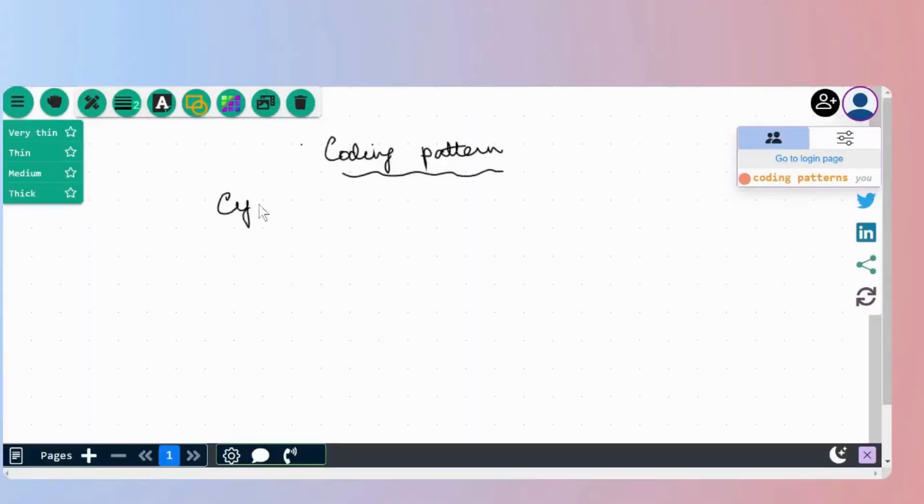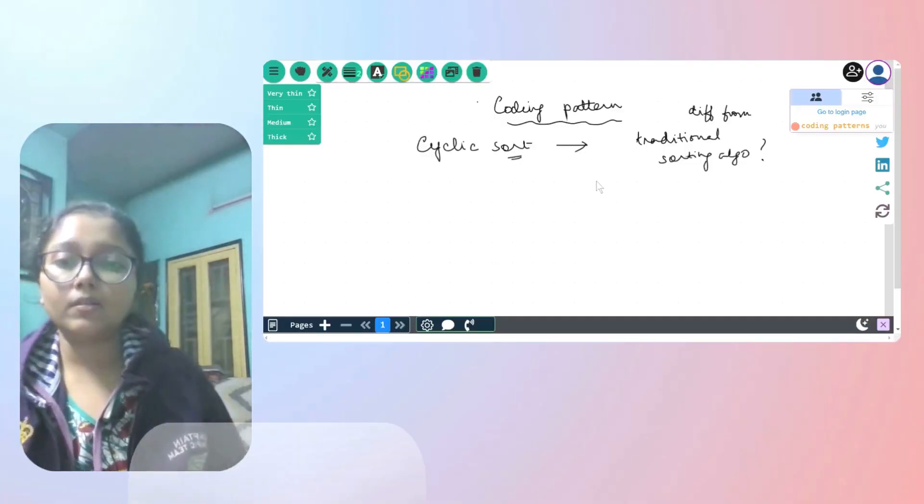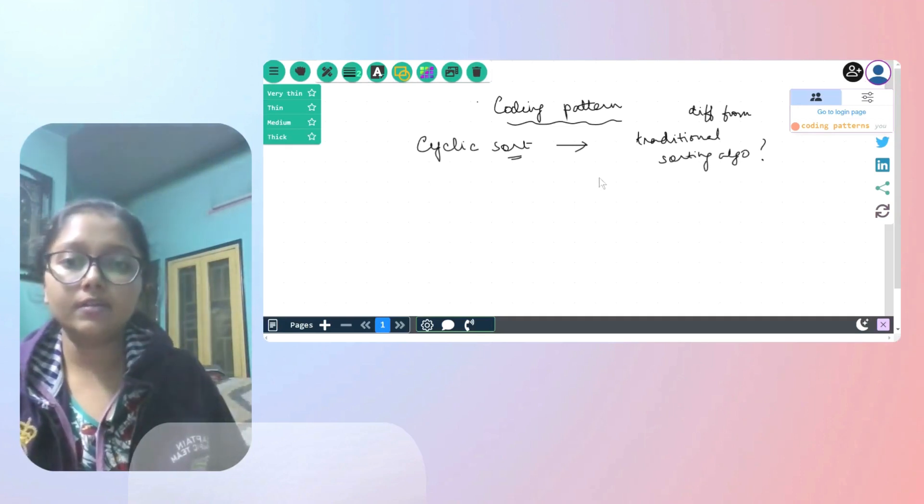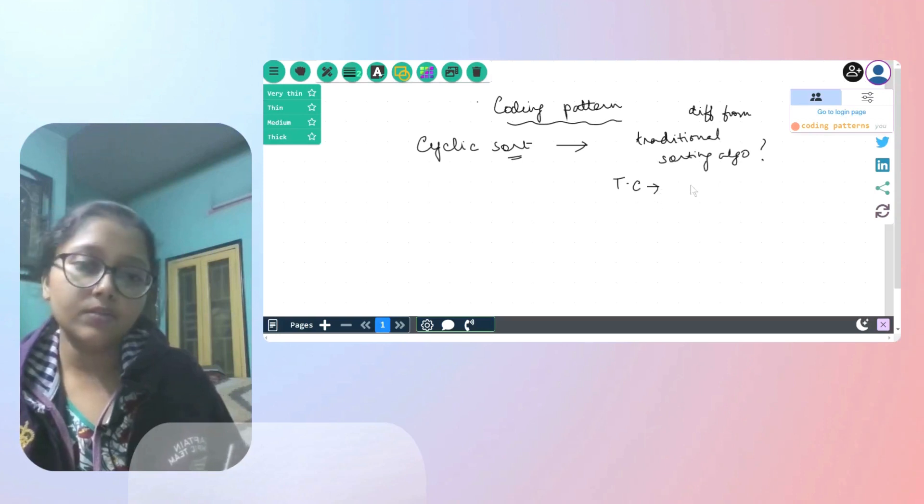What we are going to talk about is called cyclic sort. This is something which may not be very popular as bubble sort or quick sort or merge sort. But as the name suggests, this is a sorting algorithm. How is it different from all the traditional sorting algorithms, we'll find it out. Cyclic sort technique or pattern is also used for sorting a given set of numbers. For any traditional sorting algorithm, what we know so far is we know of bubble sort, insertion sort and selection sort. We also know of quick sort and merge sort. The time complexities of these sorting algorithms ranges from order of n square to order of n log n.